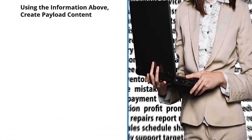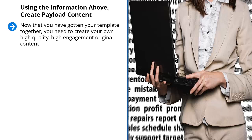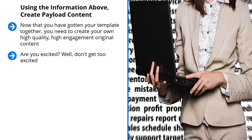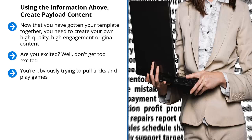Using the information above, create payload content. Now that you have gotten your template together, you need to create your own high-quality, high-engagement original content. This content is going to be used to sell people on your mailing list — when they read this content, they're supposed to get excited about joining your mailing list. Don't get too excited though. A lot of people jump in with both feet and end up sabotaging themselves because the payload content they create looks like an advertisement. That's obvious spam. Nobody's going to trust you with that — you're obviously trying to pull tricks and play games.